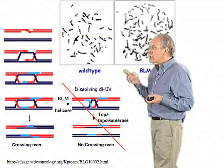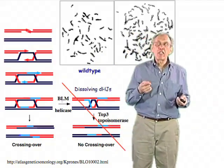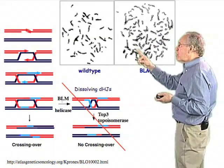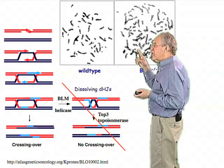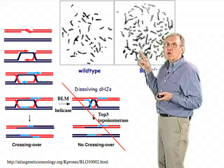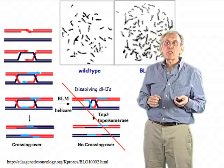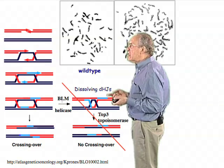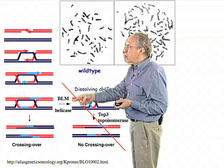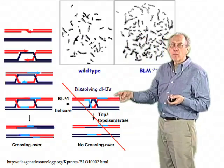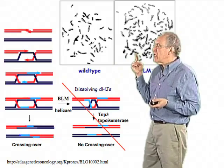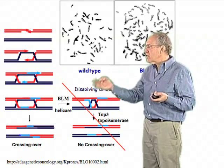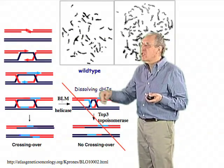Indeed, that's the case. Looking at bromodeoxyuridine-labeled chromosomes in the absence of Bloom's helicase, what you see is an astonishingly large increase in Harlequin chromosomes, where there are multiple sister chromatid exchanges happening for every replicated molecule. This is occurring because the Bloom's helicase cannot dissolve double Holliday junctions, arguing that many of these events involve not just break-induced replication but also double Holliday junctions caused by gene conversion.